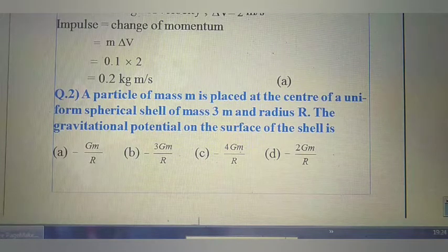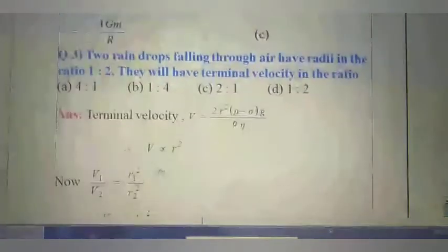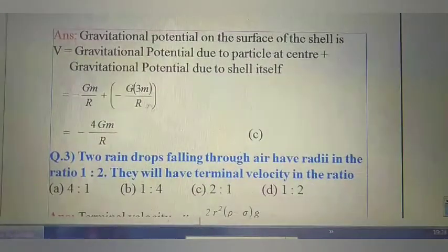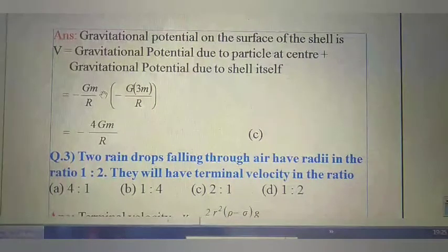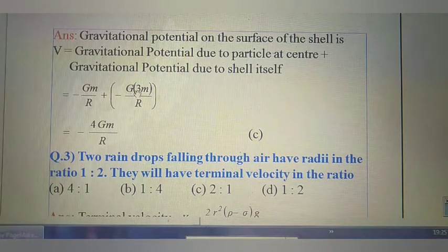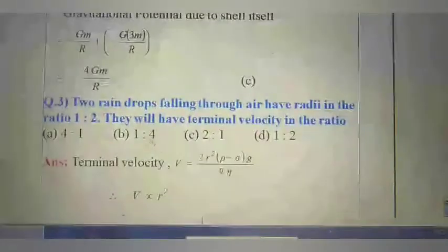The total gravitational potential on the surface of the shell equals the potential due to the particle at the center plus the potential of the shell itself. Potential due to the central particle at the surface is −Gm/R, and potential of the shell is −G(3m)/R. Taking R common, the total is −4Gm/R. So the right option is C.